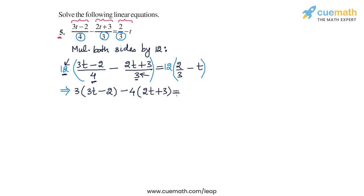And on the RHS, we have 12 into 2 by 3, that will be 8, and we have 12 into minus t, that will be minus 12t. So now you can see that the equation has been converted into a slightly different equation, where all the coefficients are integer.